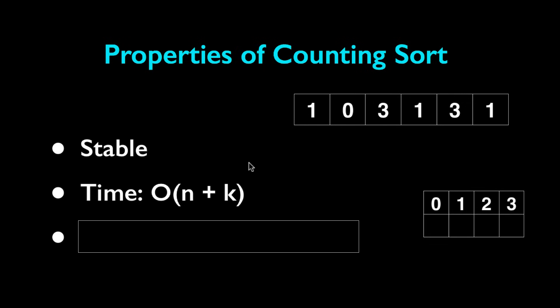And the time complexity for this algorithm is O(n + k) where n is the number of items that we have in the original array and k is the range of numbers that we could have for each item in the array.